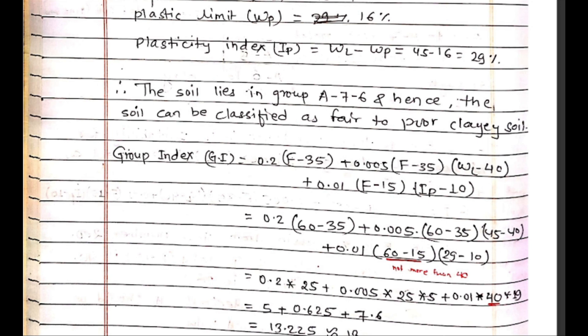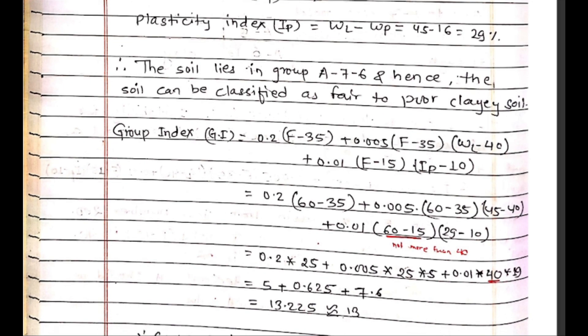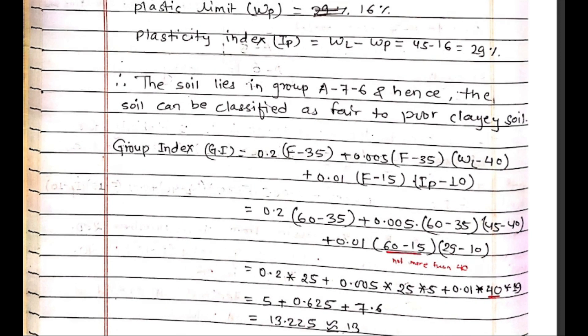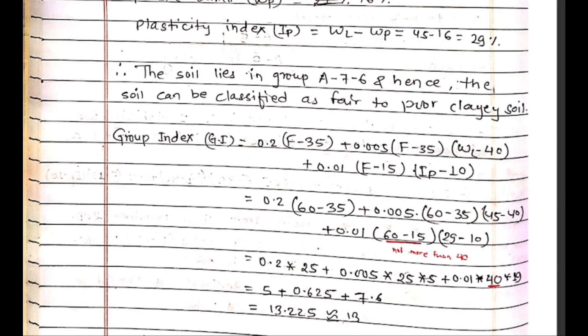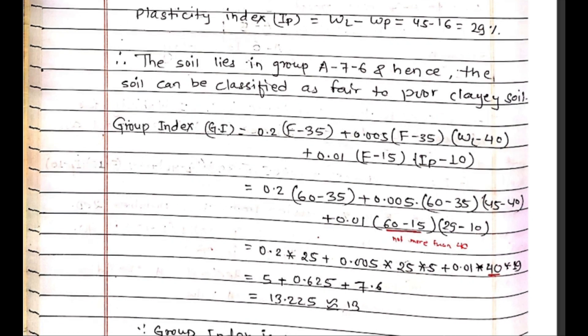So A76 can be classified as fair-to-poor clayey soil. The group index formula is: GI = 0.2(F-35) + 0.005(F-35)(WL-40) + 0.01(F-15)(IP-10).